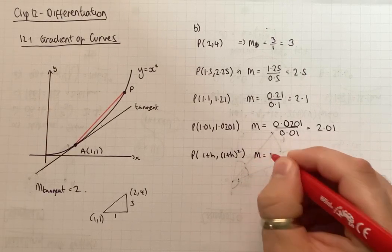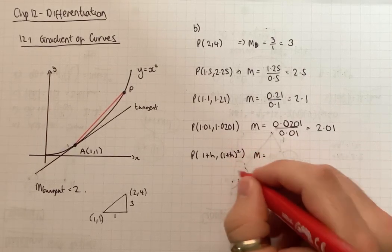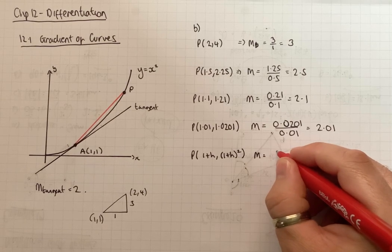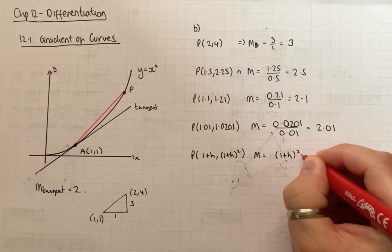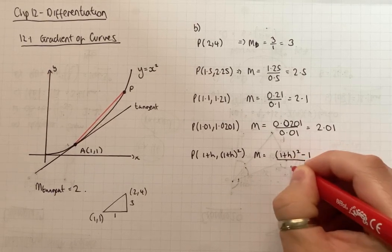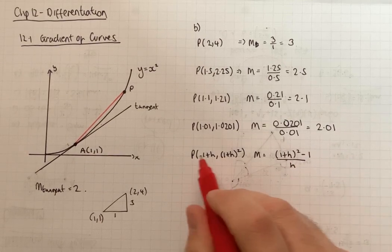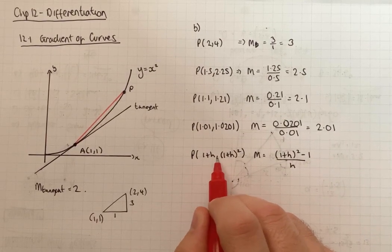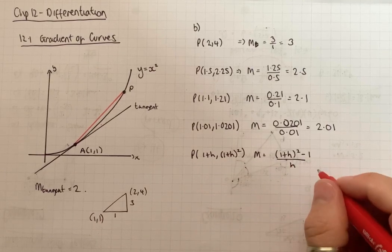So in terms of what the gradient would be here though, the difference in the Y-coordinate would be 1 plus H squared take away 1 divided by H. Because this is the difference here from 1 to 1 plus H is just H.